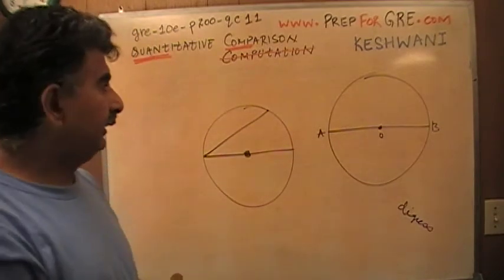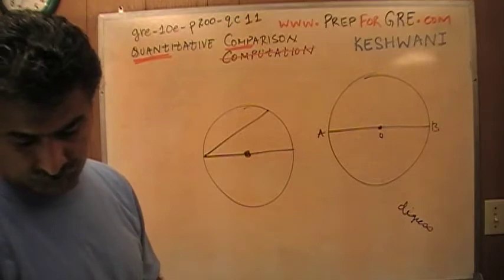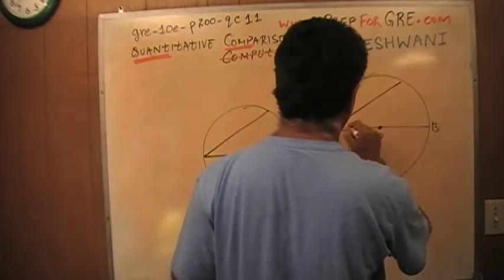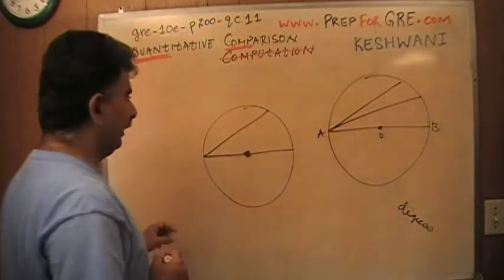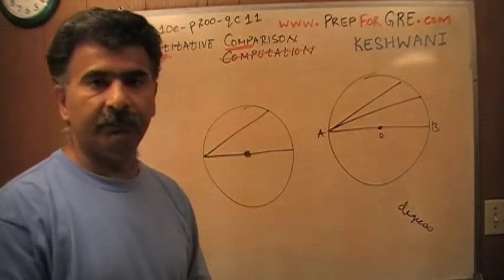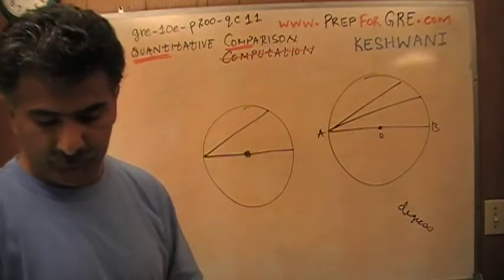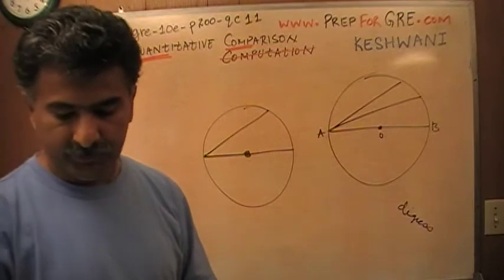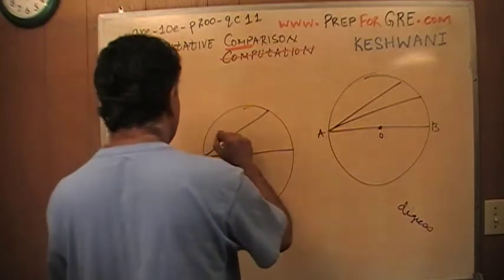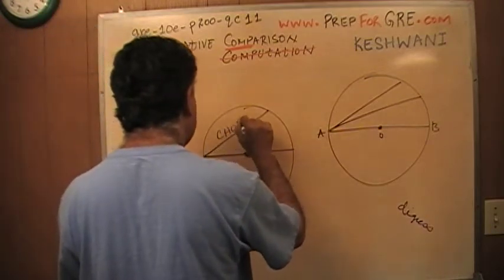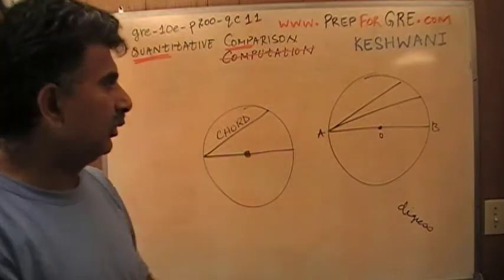Do you know what we call lines such as this one? A line that does not go through the center of the circle, because this is what we're dealing with here. We're dealing with two lines here. What is a line such as this one called? Does it have a name? Answer is yes, it does have a name. The terminology that is employed in geometry is chord. It is called a chord.